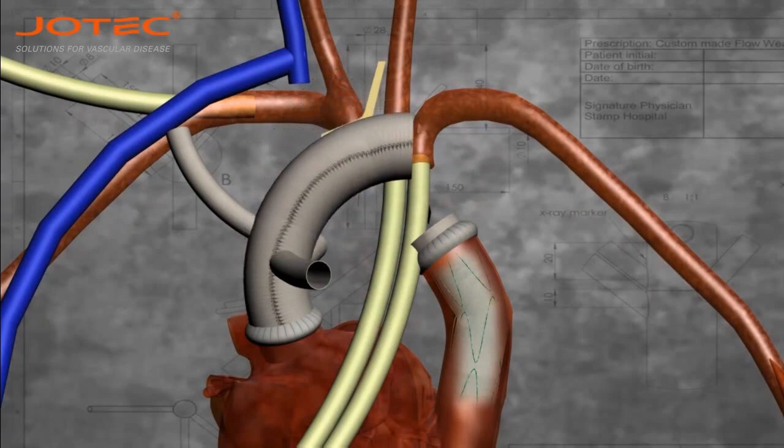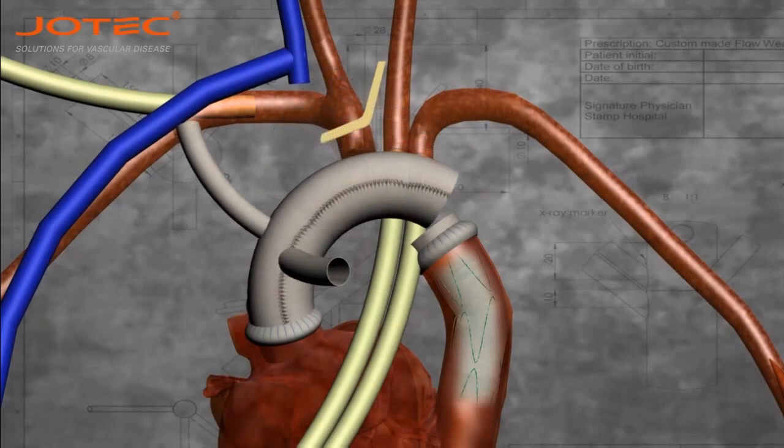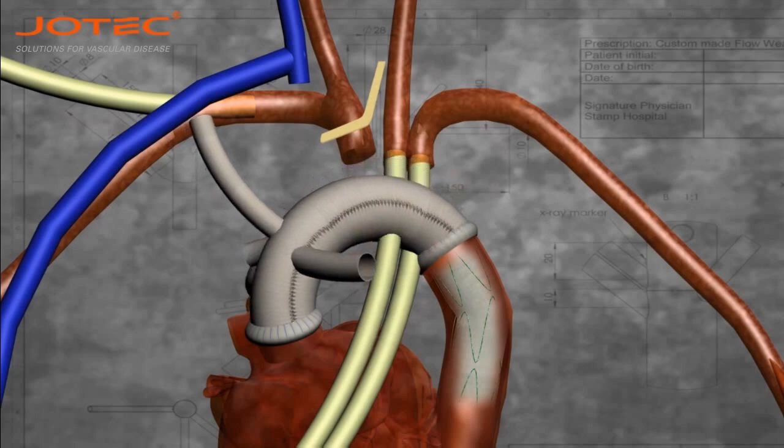Distal anastomosis between the GPE and the stent graft with 3-0 polypropylene sutures.